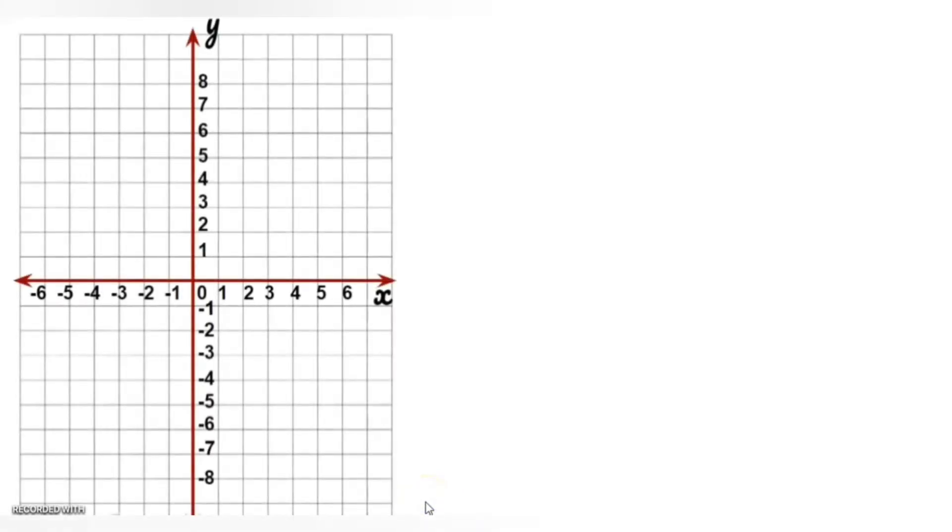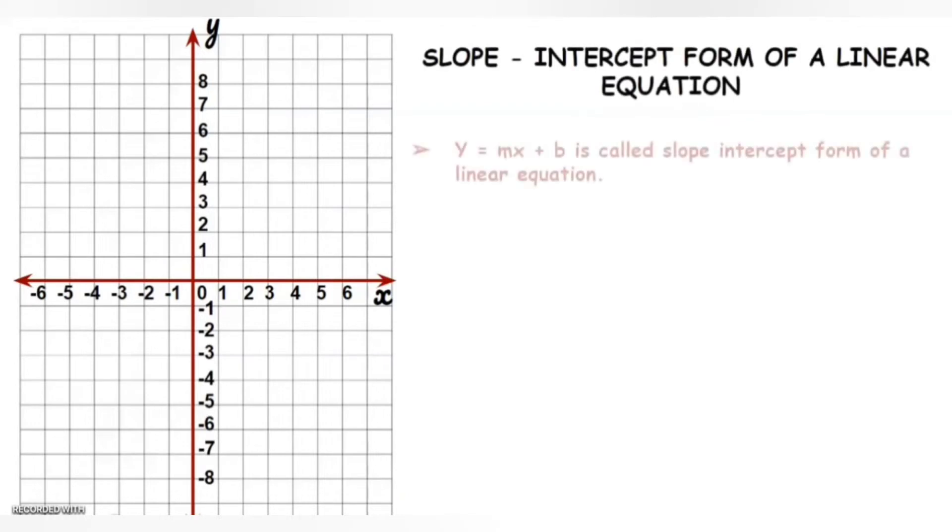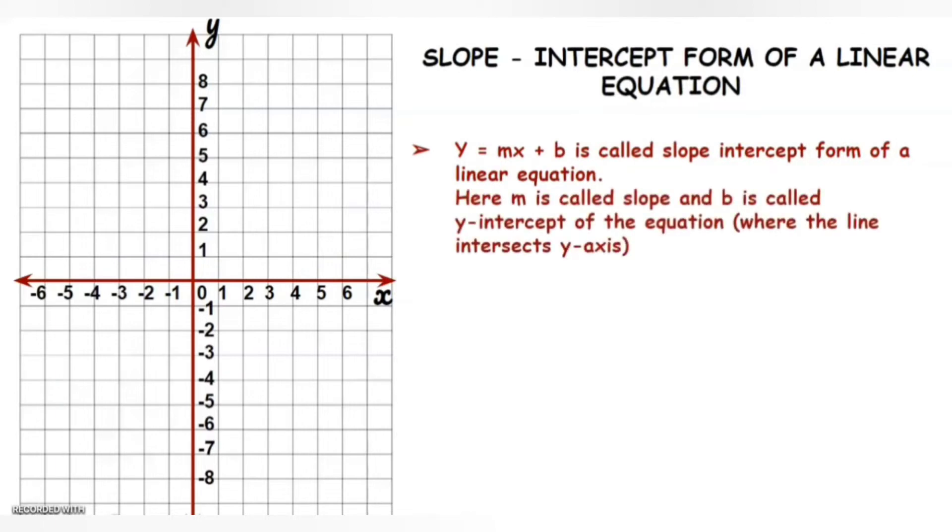Let us see what is a slope-intercept form of an equation. y is equal to mx plus b is called slope-intercept form of a linear equation. Here, m is called slope and b is called y-intercept of the equation, means where the line intersects the y-axis.